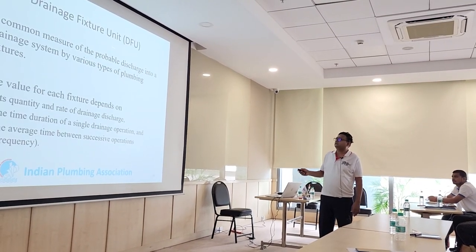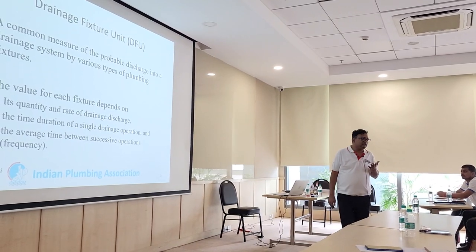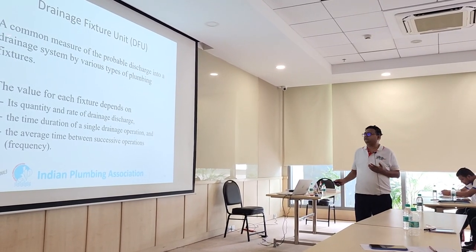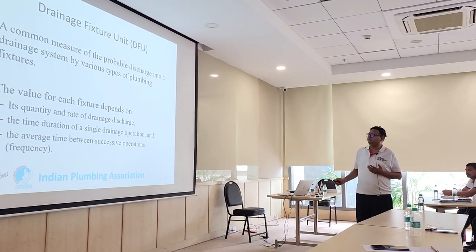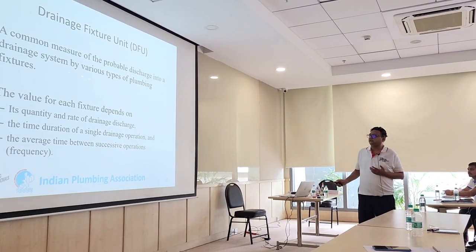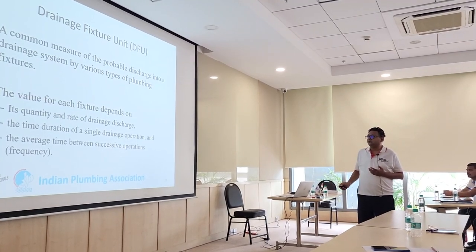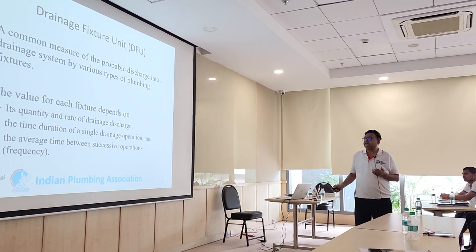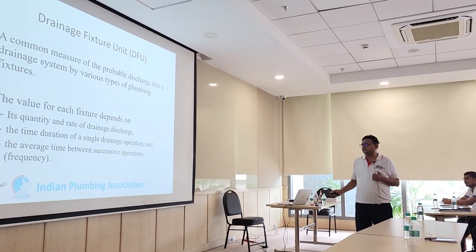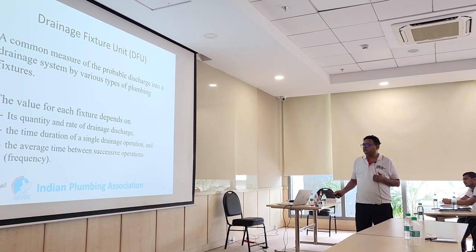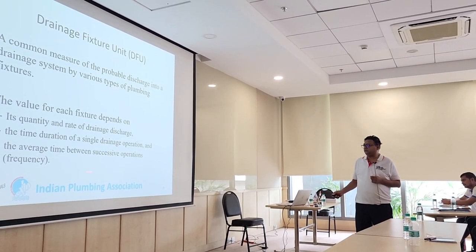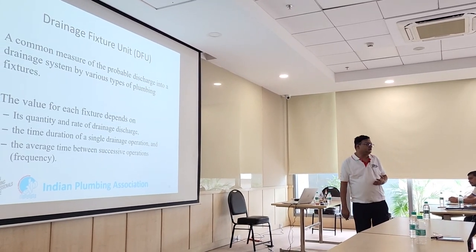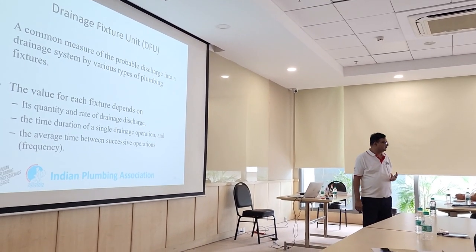Drainage fixture rate — this was covered in the first lecture also. It is a common measure of the probable discharge into the drainage system. The value of the drainage fixture rate depends upon its quantity and rate of drainage discharge, the time duration of a single drainage operation, and the average time between successive operations.